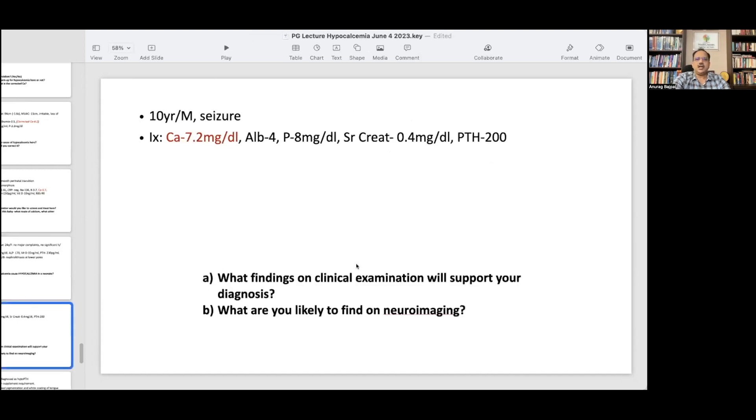Next: 10-year-old boy with seizure. Calcium was 7.2, albumin was normal, so we know the corrected calcium was definitely low. Serum creatinine was normal and PTH is very very high. So high PTH, low calcium, you've got hypocalcemia, hyperphosphatemia, and hyperparathyroidism. Which clinical clue will give you the diagnosis right away? This is an older child, not a very young child, and the PTH is high. Creatinine is normal, so there's only one possibility. Brachydactyly, obesity, calcification, cataract, all those for pseudohypoparathyroidism.